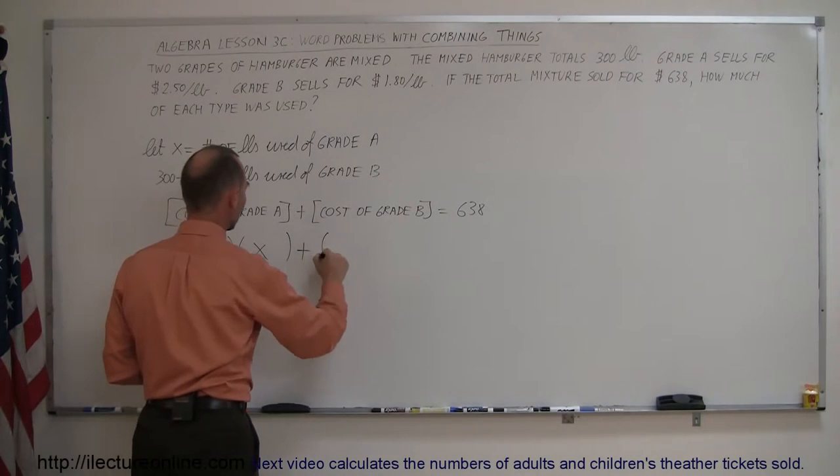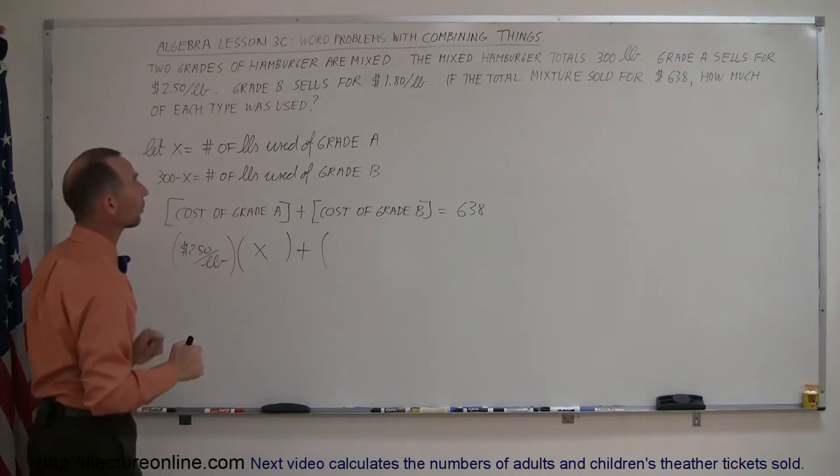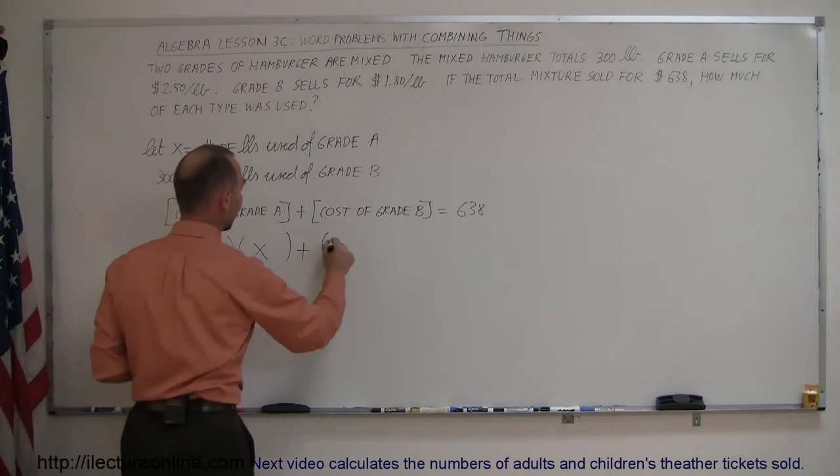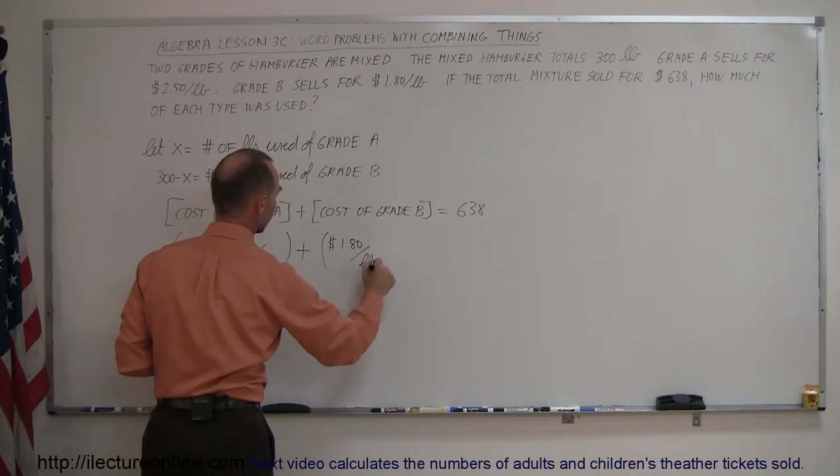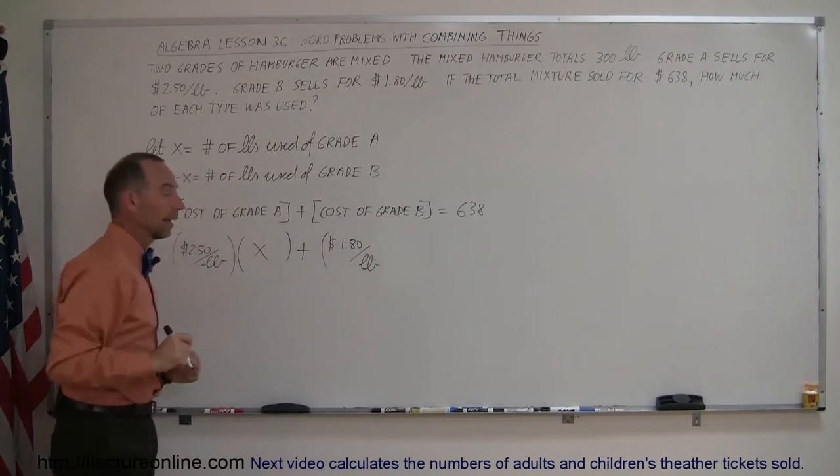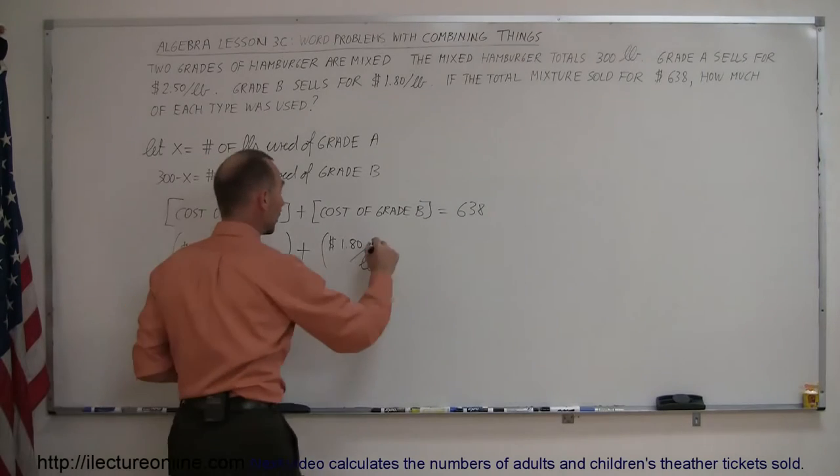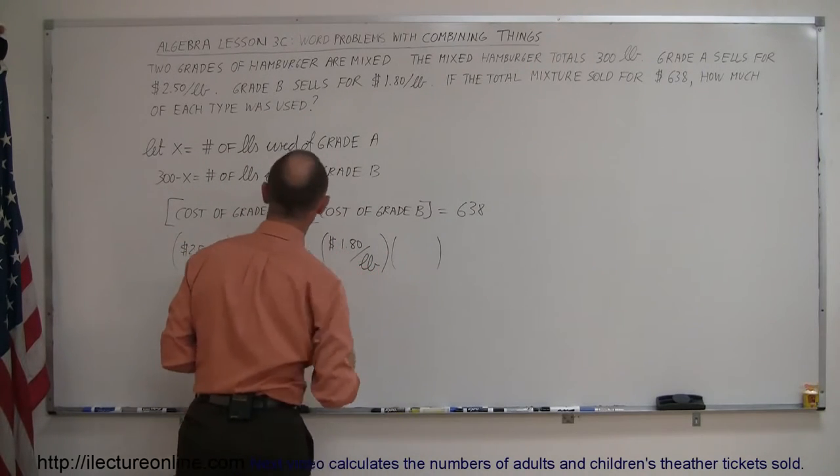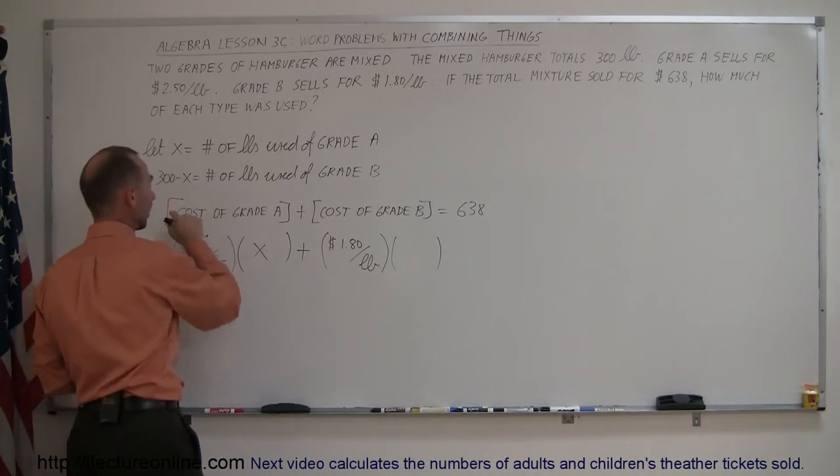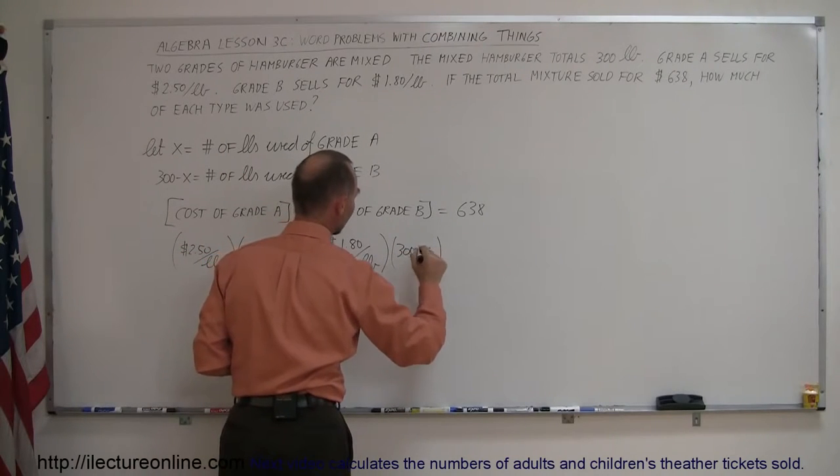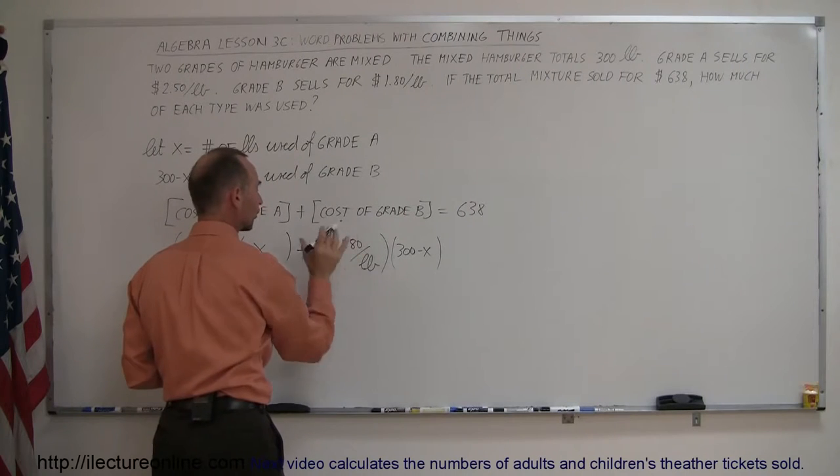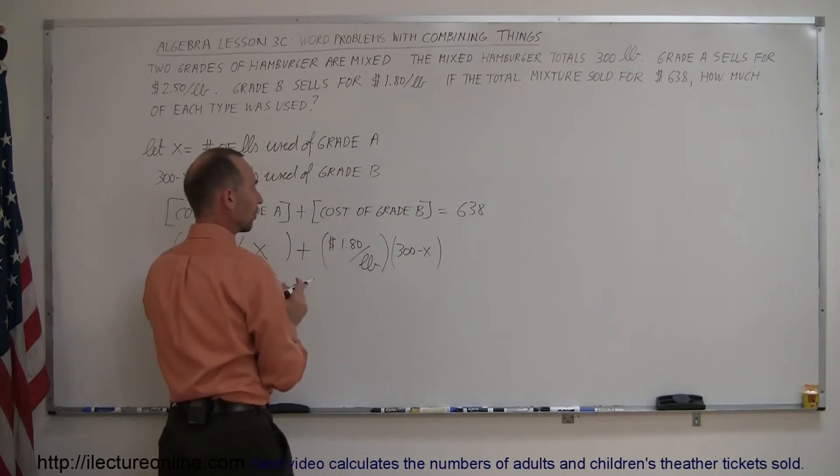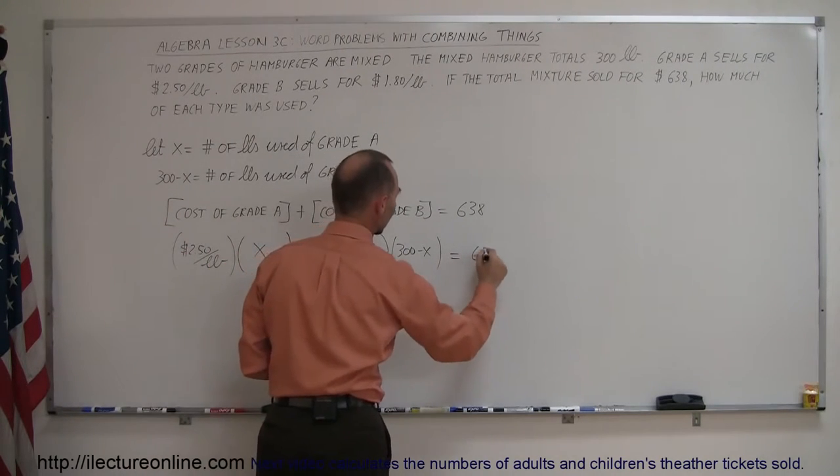Plus, what is the cost for grade B hamburger? It's $1.80 a pound, so $1.80 a pound, and we multiply that times the number of pounds that we have of grade B hamburger, and here it says 300 minus X. So, we use 300 minus X, the amount of pounds for grade B times the cost per pound for grade B. That gives us the total cost for grade B, and that adds up to $638.